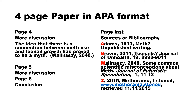The fourth page of your paper, as text content, will be more discussion and it might include a statement such as: 'The idea that there is a connection between meth use and toenail growth has proven to be a myth' (Walensky, 2048). Page five would include more discussion, and somewhere on that page, halfway down or more, would be a section for your conclusion, where based on the information you gathered, you would summarize what you learned from all of the research you have done.